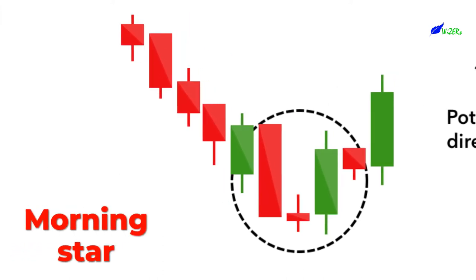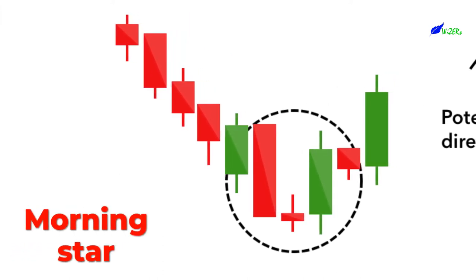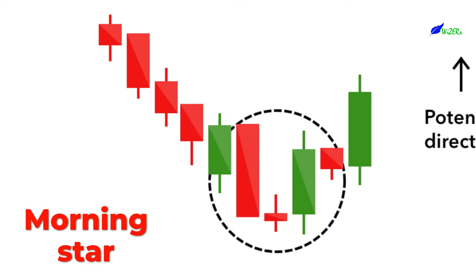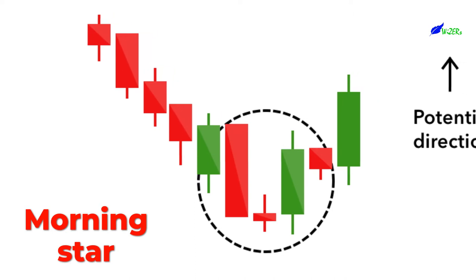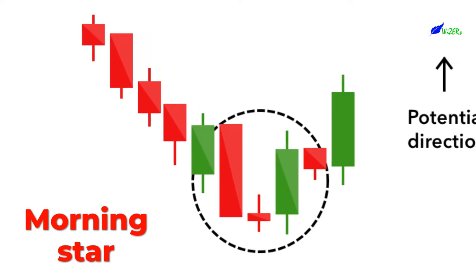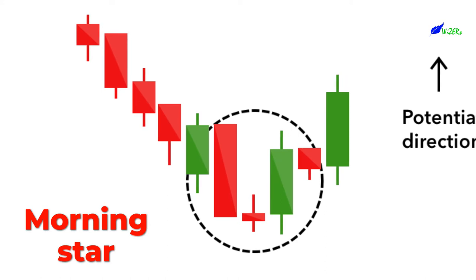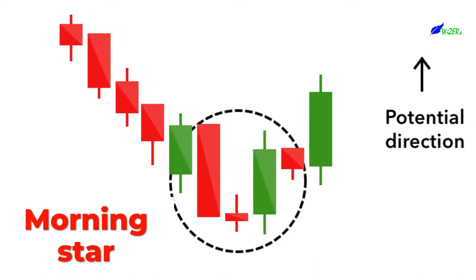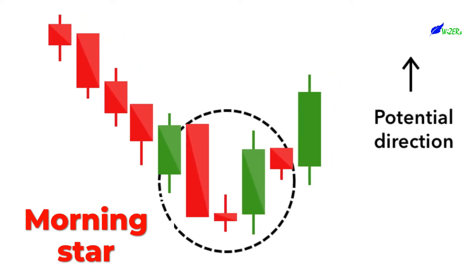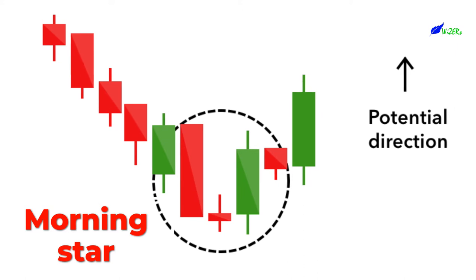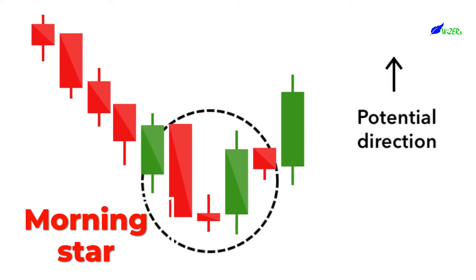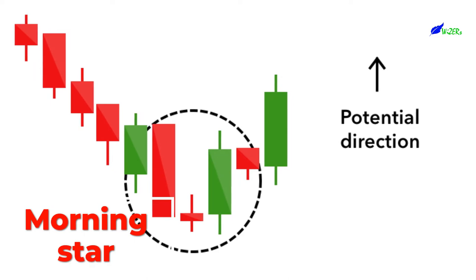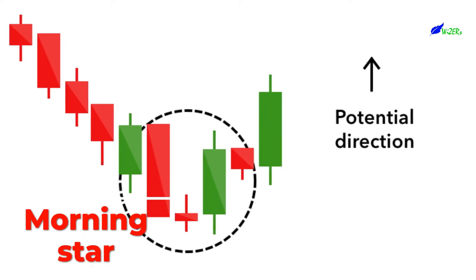Morning Star. The Morning Star candlestick pattern is considered a sign of hope in a bleak market downtrend. It is a three-stick pattern: one short-bodied candle between a long red and a long green. Traditionally the star will have no overlap with the longer bodies, as the market gaps both on open and close. It signals that the selling pressure of the first day is subsiding, and a bull market is on the horizon.